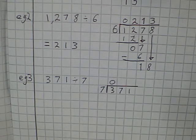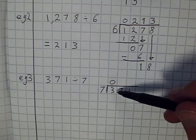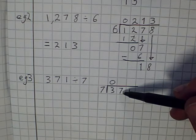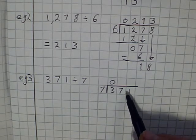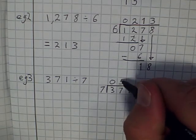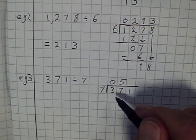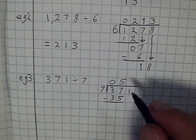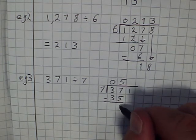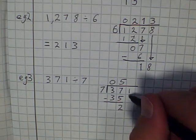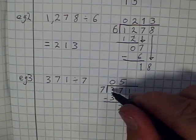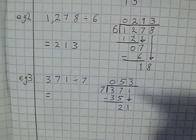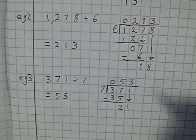Well, 2 lots of 7 is 14, 3 lots of 7 is 21, 4 lots of 7 is 28, 5 lots of 7 is 35, 6 lots of 7 is 42. So it goes in 5 times because that's as close as we can get. So 5 lots of 7 are 35. And I have, if I take them away, take the 35 away from 37, I've got 2 left over. I'm going to bring down the 1. How many times does 7 go into 21? Exactly 3 times. So my answer is 53.